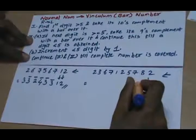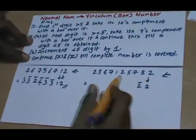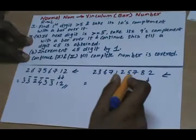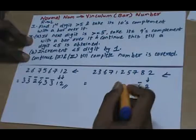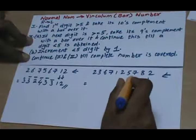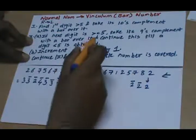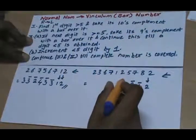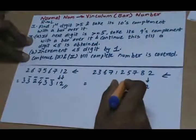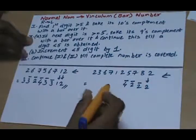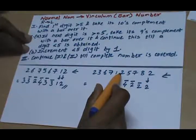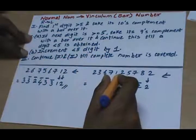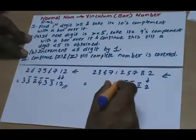We take nines complement of 8, which gives 2-bar. As the next digit is again greater than 5, we take its nines complement — that gives 2-bar. As the next digit is again greater than or equal to 5, we take its nines complement — nines complement of 5 gives 4-bar. As the next digit is smaller than 5, we go to step B and increment it by 1, so incrementing 2 by 1 gives us 3.